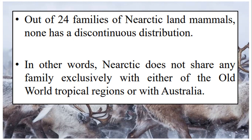Out of 24 families of Nearctic land mammals, none has a discontinuous distribution. In other words, the Nearctic region does not share any family exclusively with the Old World tropical regions or with Australia. It is the smallest biogeographical region we have discussed, with very few families that are exclusive or endemic to this region.